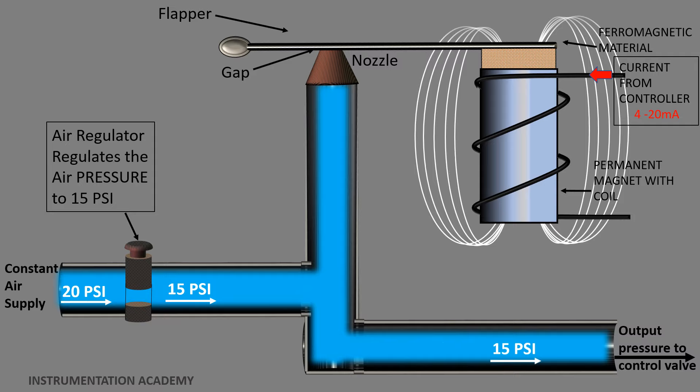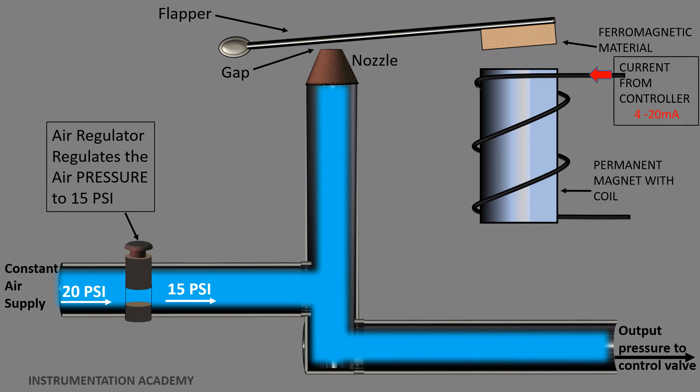If weak current passes through the coil, the gap between the nozzle and the flapper increases and relatively more air can pass through the nozzle. The system is set up in such a way that if 4 mA current passes through the coil, then the pressure at the end opposite to that of the nozzle is 3 psi. If 20 mA current passes through the coil, then the pressure at the end opposite to that of the nozzle is 15 psi.